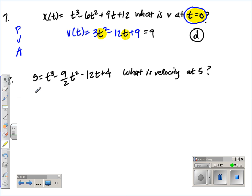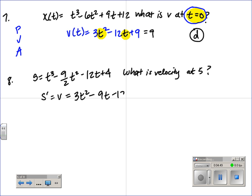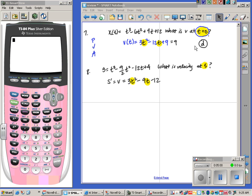Okay, number eight, take the derivative, which would be the velocity, and get 3t squared minus 9t minus 12. Again, this does not ask us to set it equal to zero. It just says, what is the velocity when the time is five? So plug in five. You can go to your calculator to do so. You can say 3 times 5 squared minus 9 times 5 minus 12 equals 18, which is choice C.